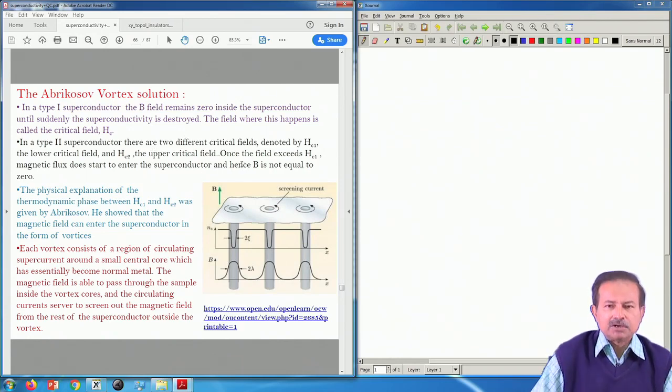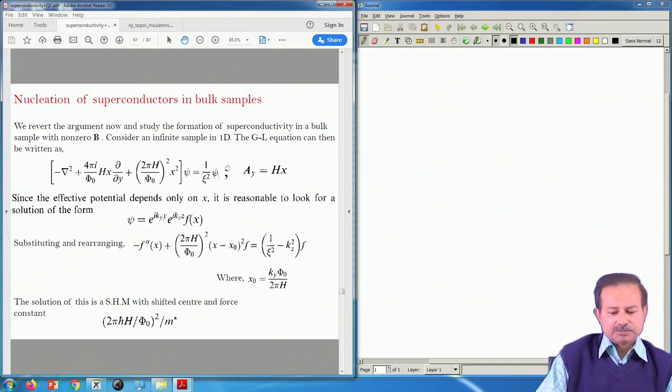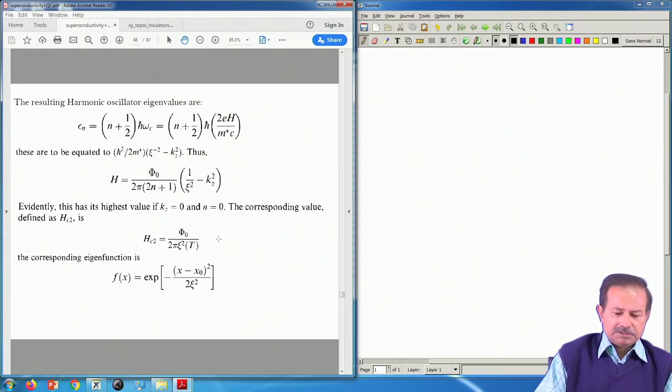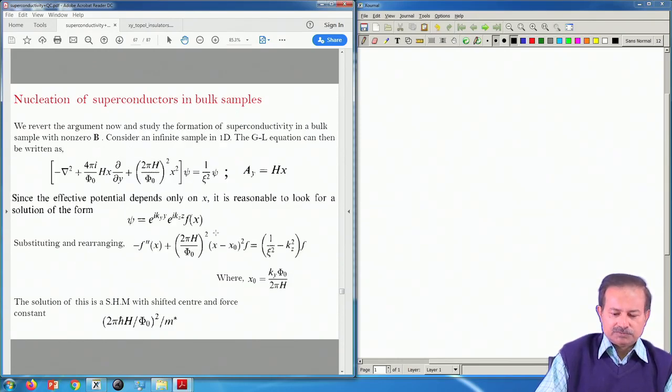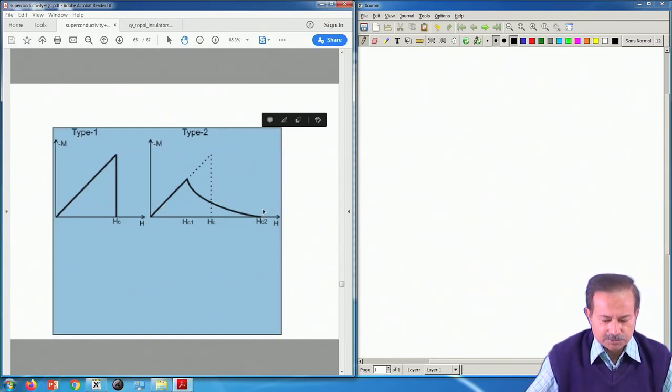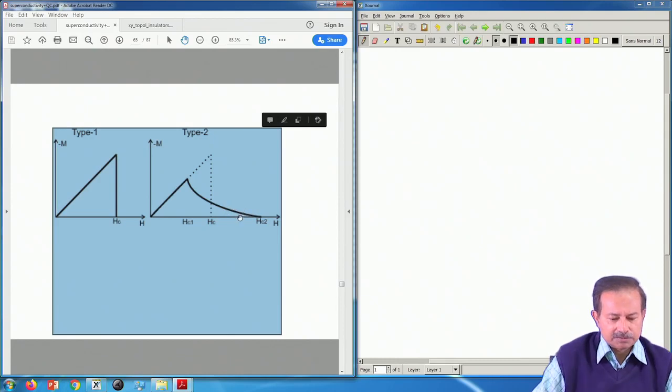The vortex solution we outlined as to how Abrikosov got it. The mathematics is almost similar to what one did in integer quantum Hall effect, the famous Landau problem. You put electrons in a perpendicular magnetic field, strong magnetic field, and then you find the solution. The idea is that from that you find out what is the first value of magnetic field at which superconducting solution becomes non-zero. So it is called nucleation of superconductivity and it starts at a particular value of H which we called HC2. Psi becomes non-zero here.